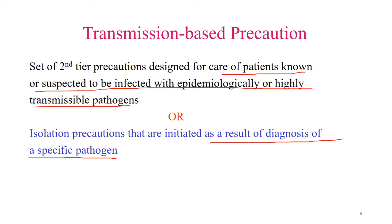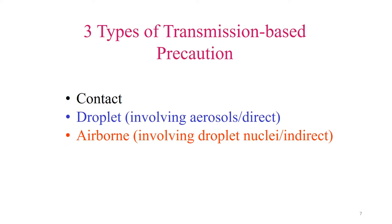There are three types of transmission-based precautions: contact precaution, droplet precaution, and airborne precaution. If the patient has chicken pox, you have to take contact precaution or airborne precaution. Droplet precaution involves direct droplets or aerosols, and airborne precaution involves droplet nuclei, which can be an indirect mode of transmission.